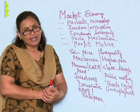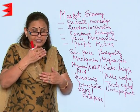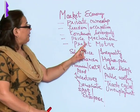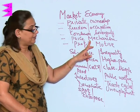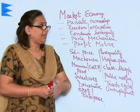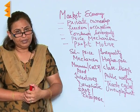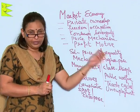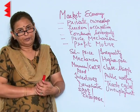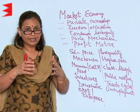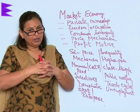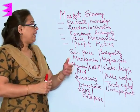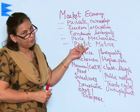The next feature is the price mechanism, which is decided by factors of production, consumption, need, and requirement. In the market economy — the capitalist economy — the sole motive remains profit and profit alone, because every individual is working towards that aim. Every businessman wants to make profit and profit alone.